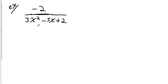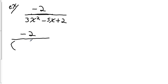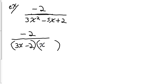Once you've determined it's a proper rational expression, the next thing you want to do is factor the denominator, because each one of the factors of the denominator is going to be a denominator of our partial fraction decomposition. This quadratic is fairly easy to factor directly — we'll find two factors that multiply together to give that polynomial. Those factors are 3x minus 2 and x minus 1.